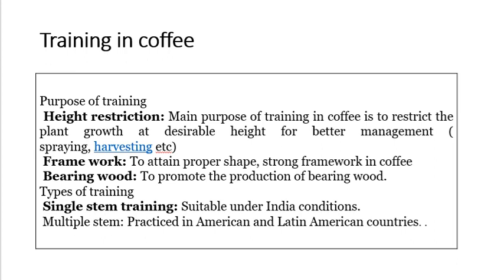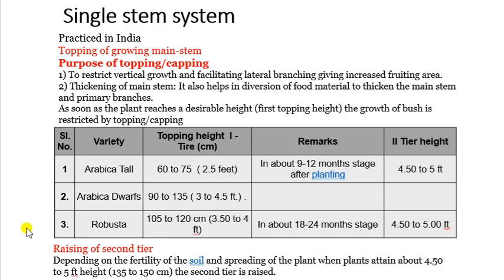Training in coffee: the purpose of training is height restriction, framework development, bearing wood management, and single stem training. There are two types of training followed in coffee: single stem training and multiple stem training. Single stem training is suitable under Indian conditions, while multiple stem training is practiced in America and Latin American countries. Topping or capping of the growing main stem is done to restrict vertical growth and facilitate lateral branching, giving increased fruiting area. It also helps in thickening of the main stem and diversion of food material to the main stem and primary branches.